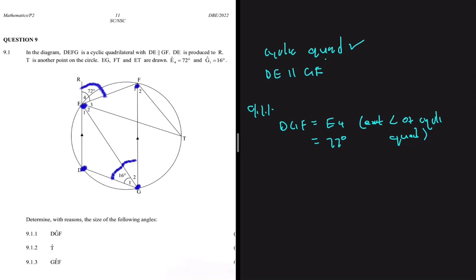So DGF is equal to 72 degrees. And then now let's do 9.1.2. So 9.1.2, we're looking for the size of angle T. Angle T is right here.